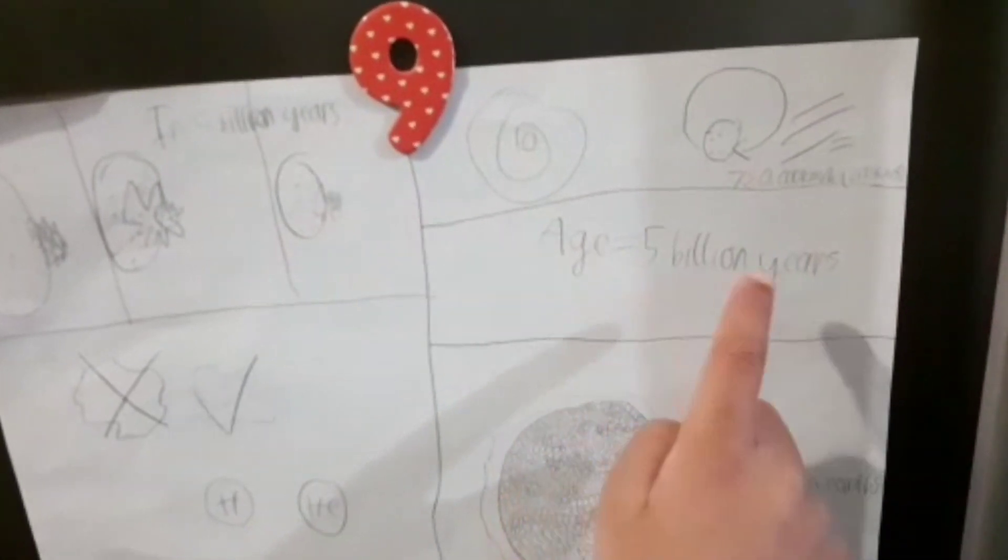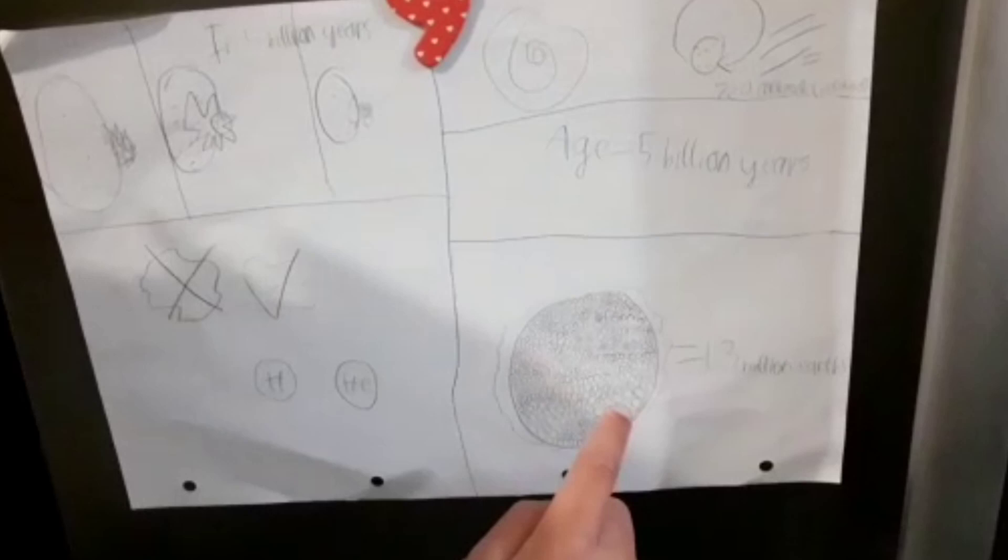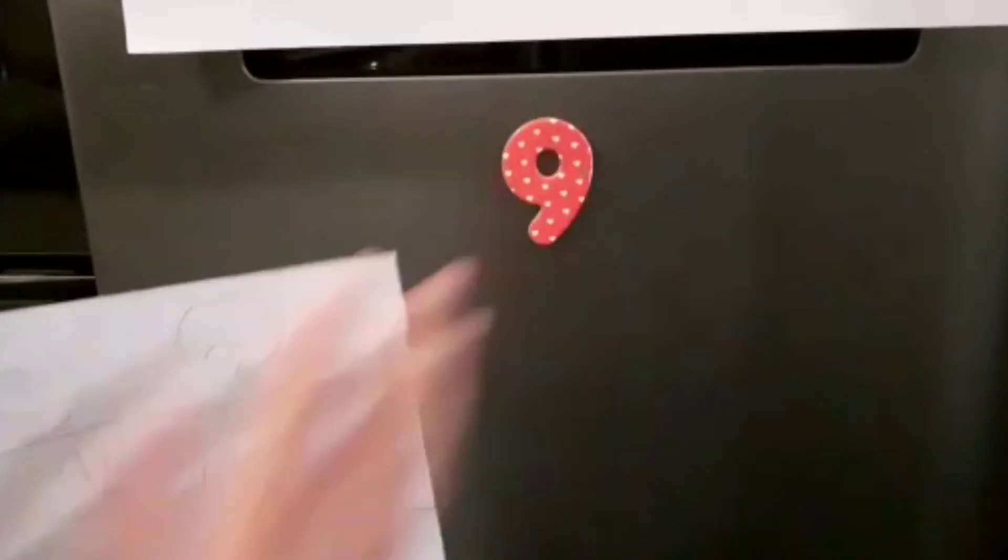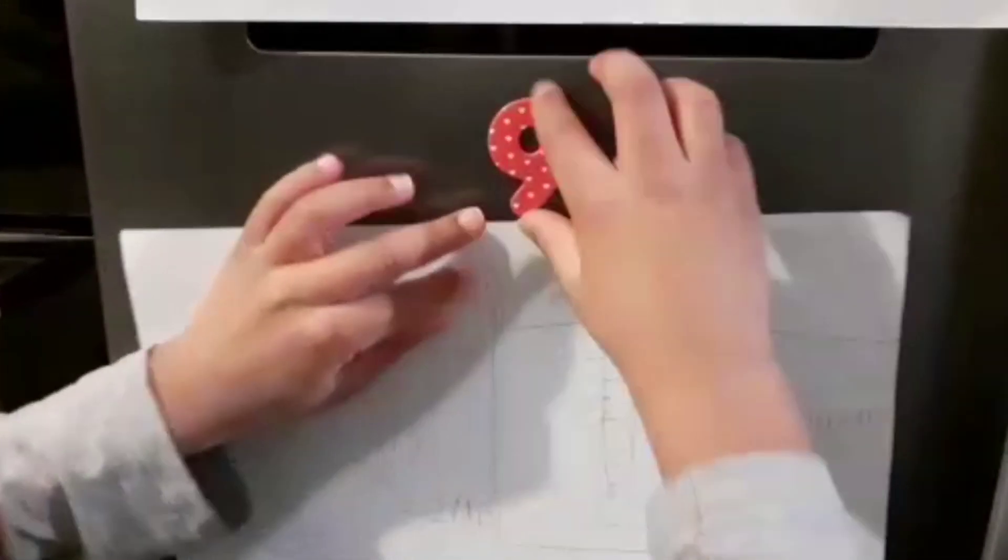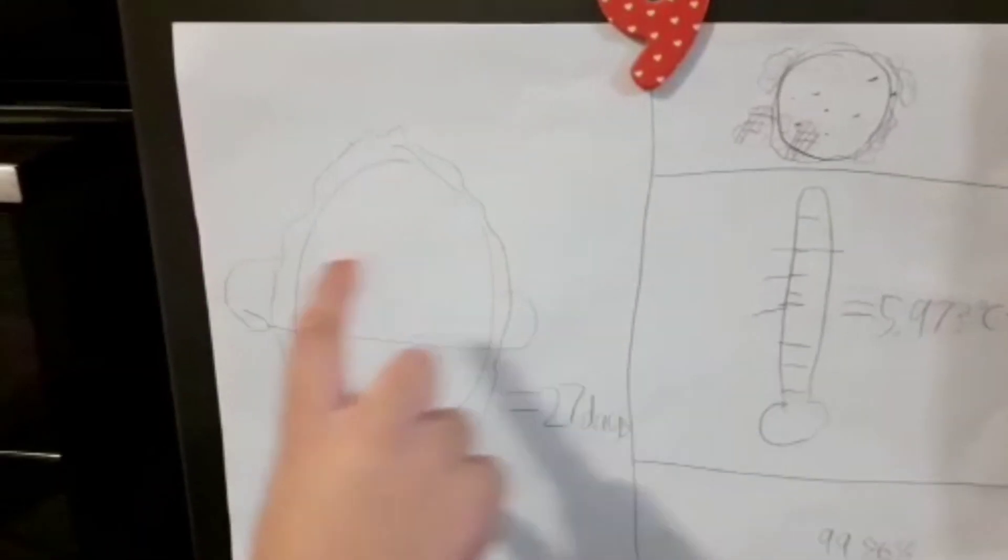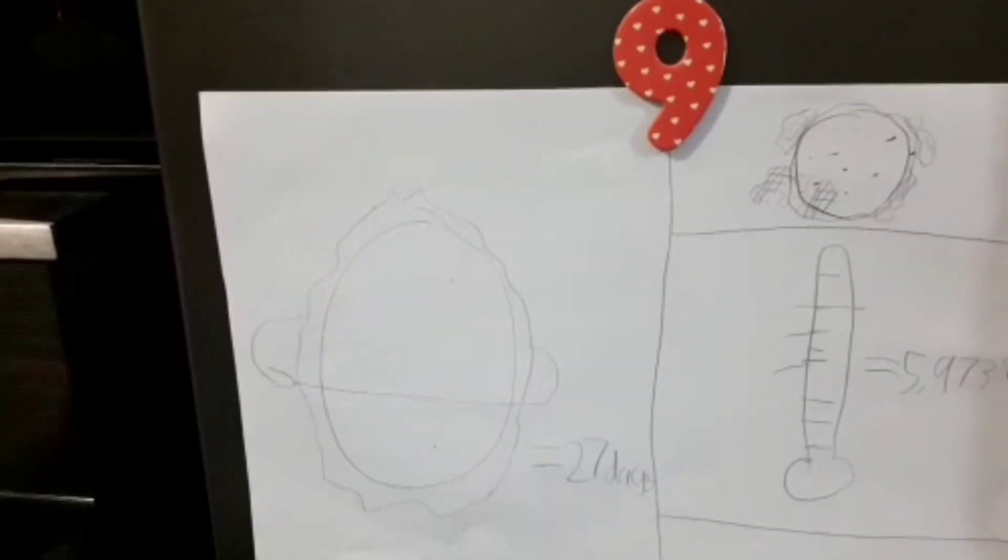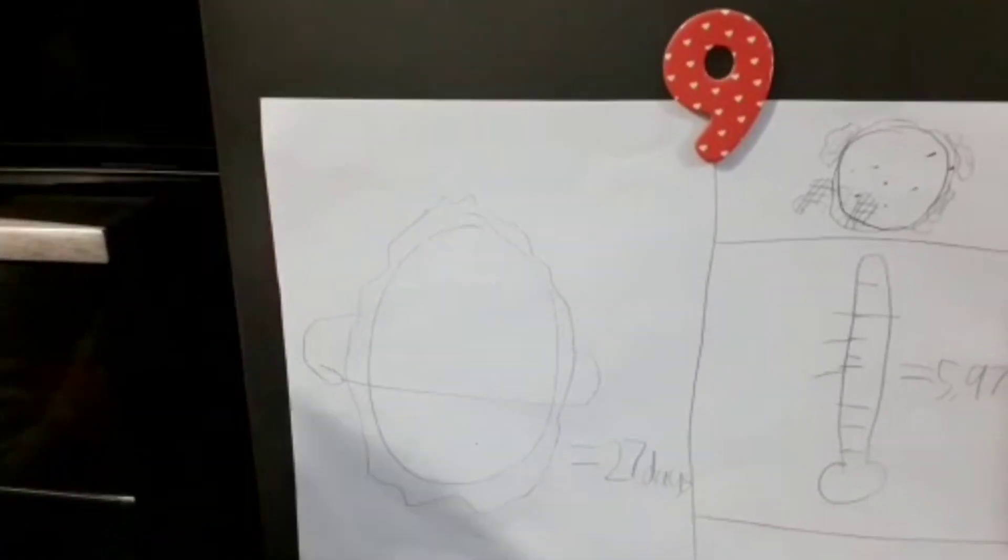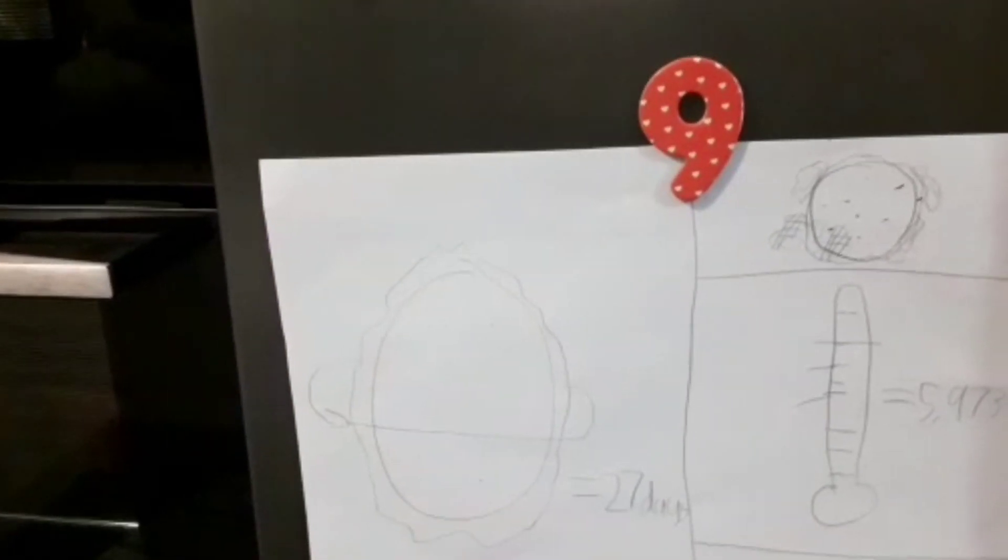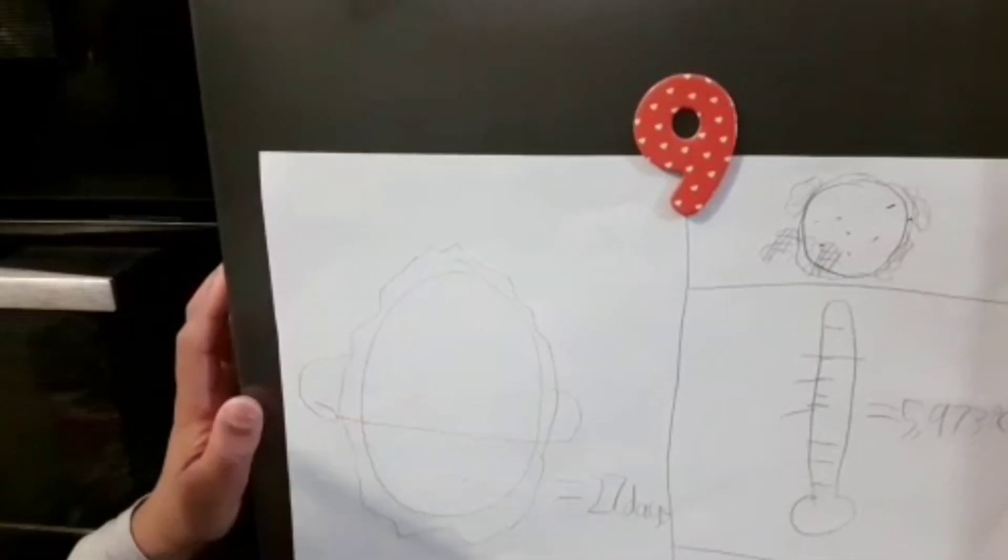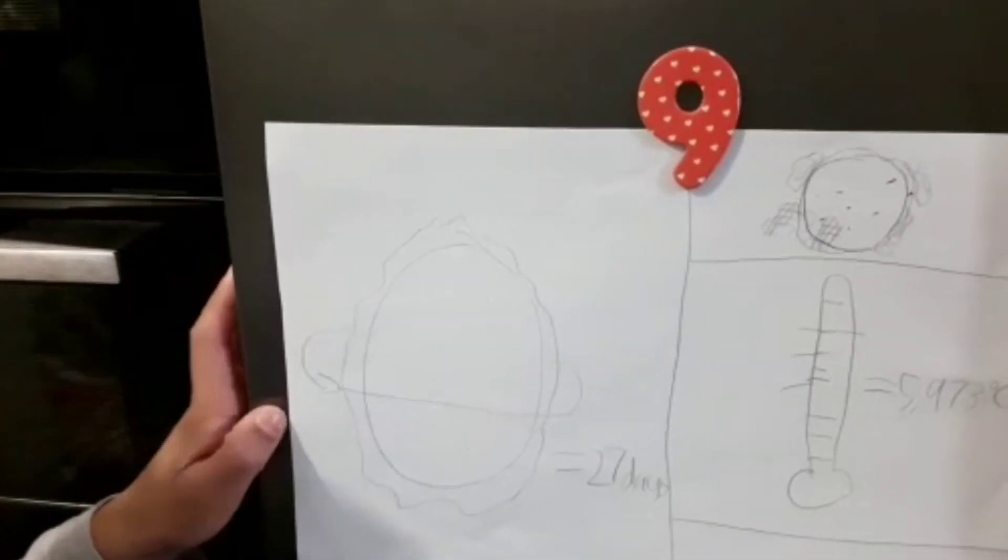The Sun's age right now is five billion years, and did you know that 1.3 million Earths can fit inside the Sun? In the middle parts, the Sun takes about... in the parts close to the equator, it takes about 27 days to rotate around.